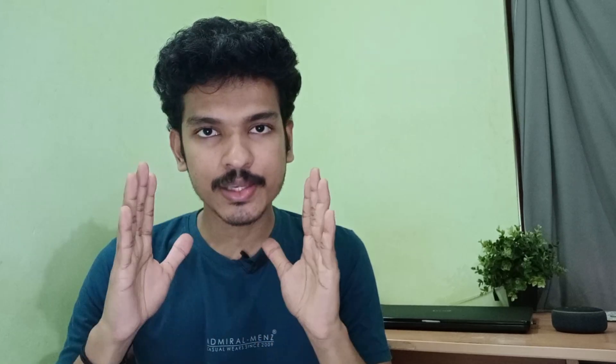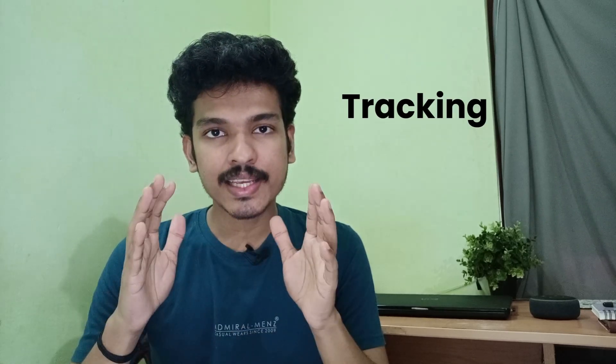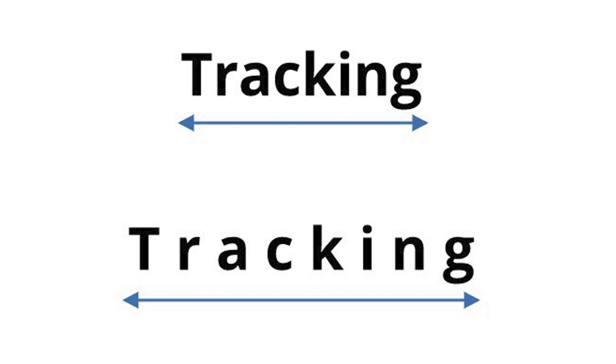The second thing we are interested in is the kerning. Kerning relates to the spacing between individual characters or letters in a font.